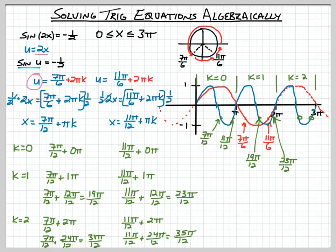So this is a process that you can do for any of these types of functions if you're trying to solve it algebraically. Let me summarize that we have now six solutions to this between 0 and 3π. The six solutions are 7π/12, 11π/12, 19π/12, 23π/12, 31π/12, and 35π/12. So we've got six different values between 0 and 3π where sin(2x) equals negative 1/2.